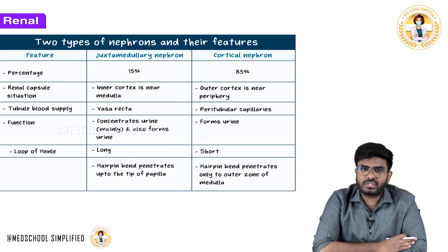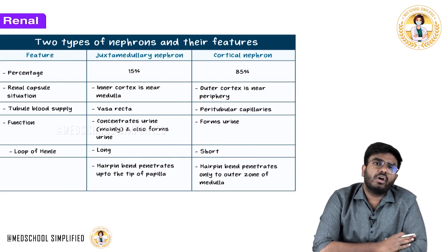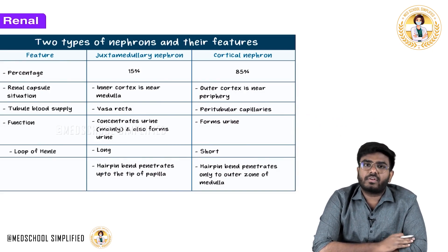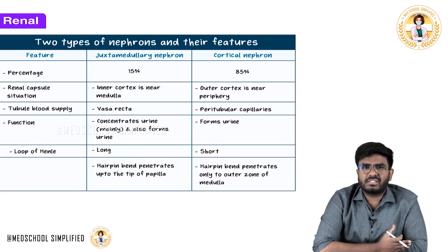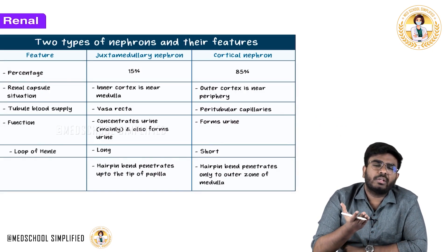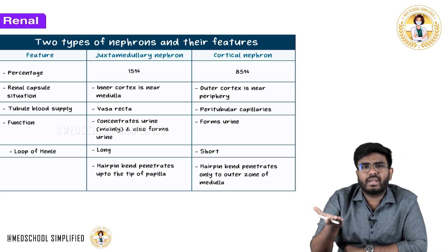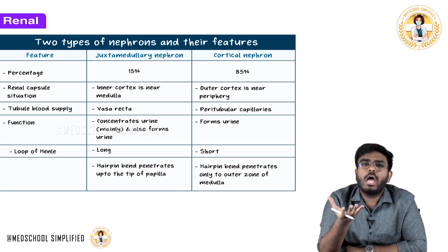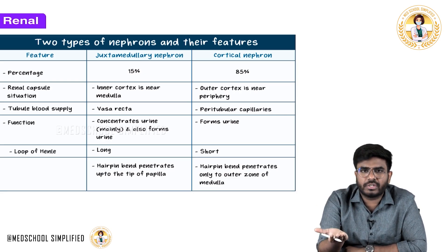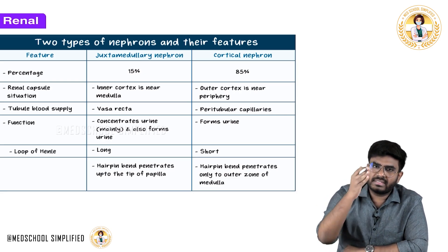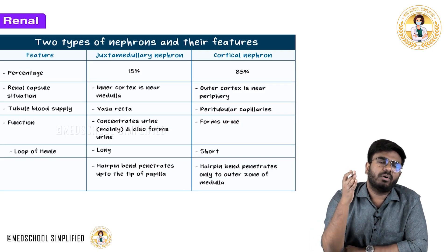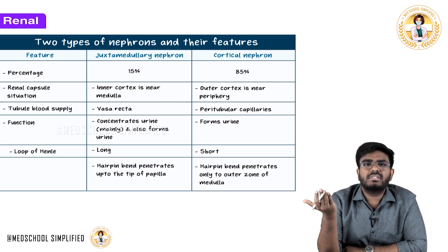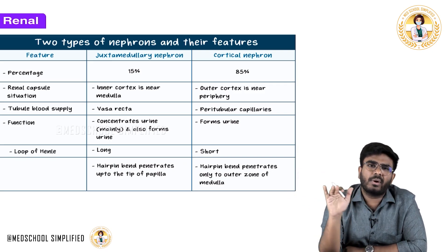Structure and functions of the nephron. Every student knows the basic structure: Bowman's capsule, proximal convoluted tubule, loop of Henle (descending and ascending limbs), distal convoluted tubule, collecting tubules, and collecting ducts. These are the normal parts of the nephron.